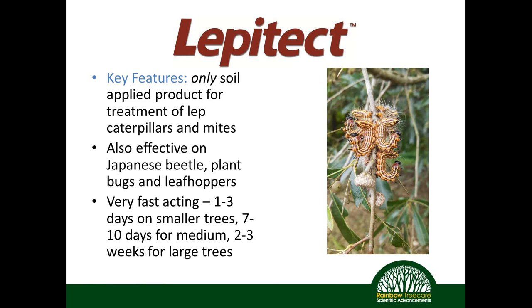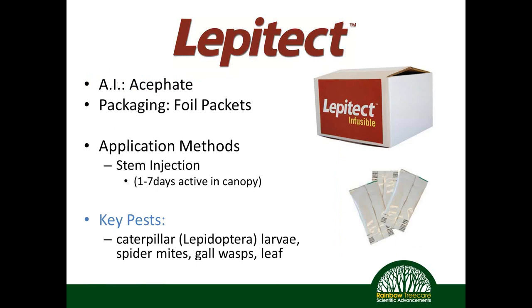Lepitech is also effective on a whole host of other insects — similar to what you can control spraying acephate as a foliar. Because it moves through the tree in a systemic fashion, when the pest begins to consume leaf or tree matter, they'll ingest the acephate and perish. Lepitech is very water-soluble and moves very fast within a tree. On smaller trees, we get product into the plant within one to three days. For medium-sized trees, seven to ten days. For larger trees — upwards of around 50 inches in diameter — we're seeing results within two to three weeks.